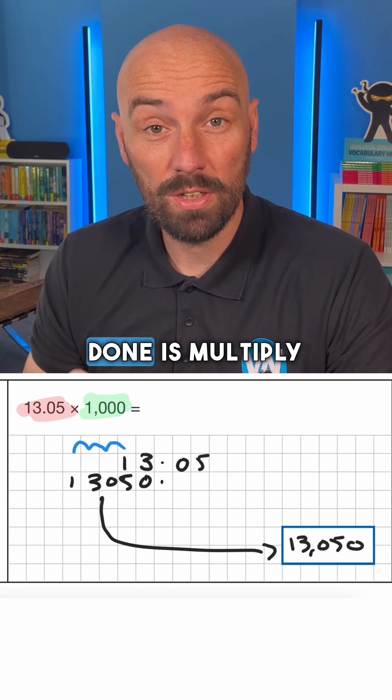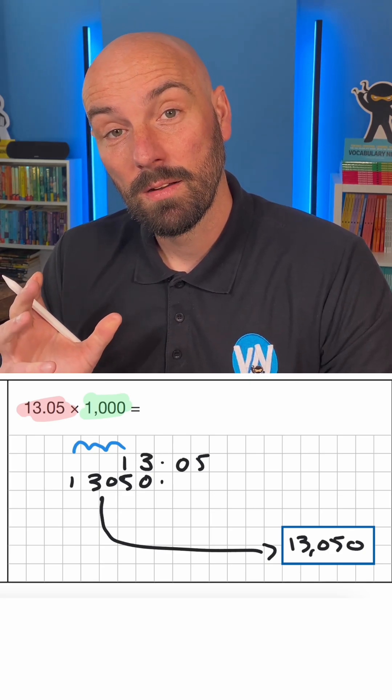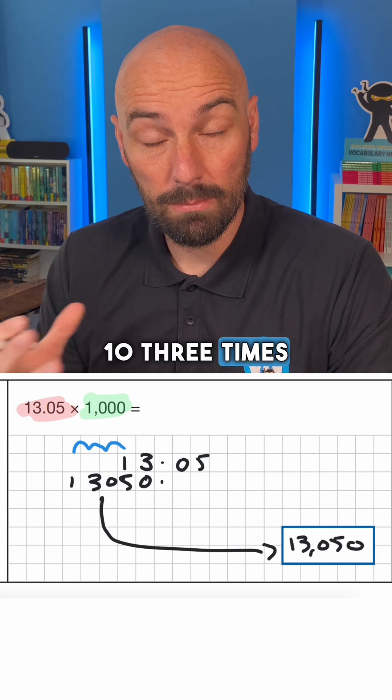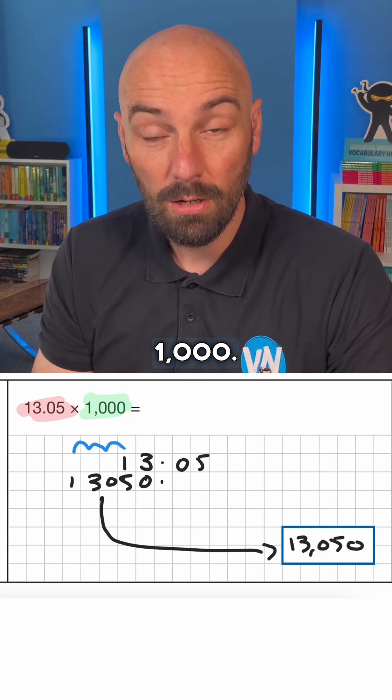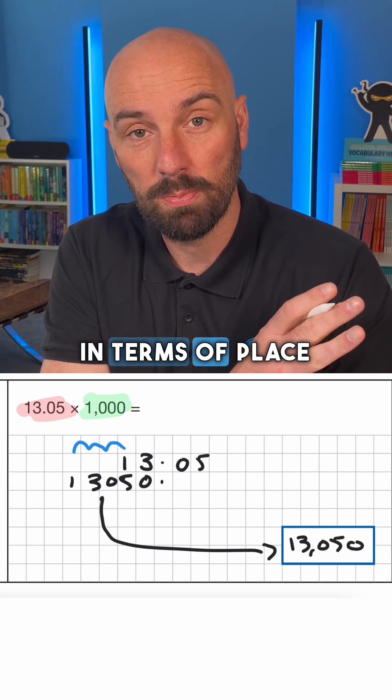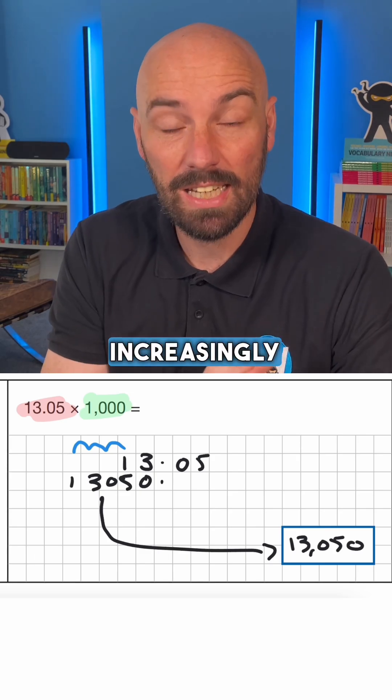And all we've done is multiply that number by the power of ten, three times. So a thousand. So we've made a jump of times ten, times ten, times ten, which is times a thousand. We've jumped along three places in terms of place value, becoming increasingly larger.